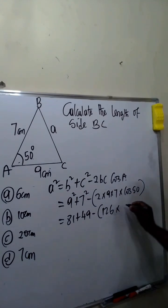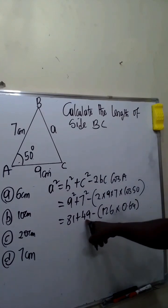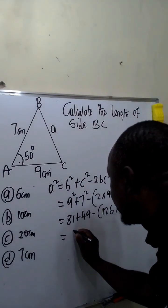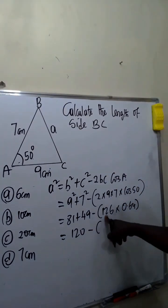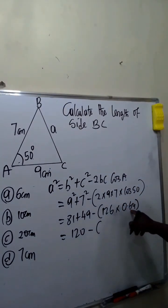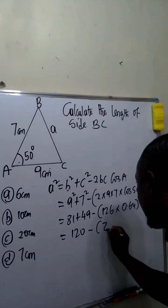126 times cos 50 is 0.64. Now 81 plus 49 is 120, minus 126 times 0.64 is 81.